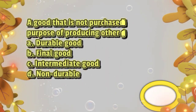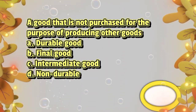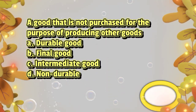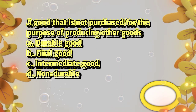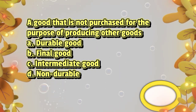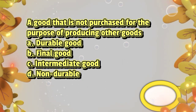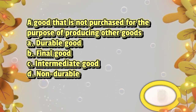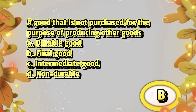A good that is not purchased for the purpose of producing other goods. A. Durable good, B. Final good, C. Intermediate good, D. Non-durable. The answer is letter B.